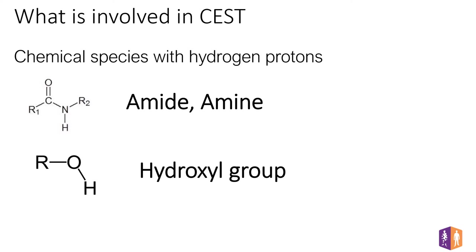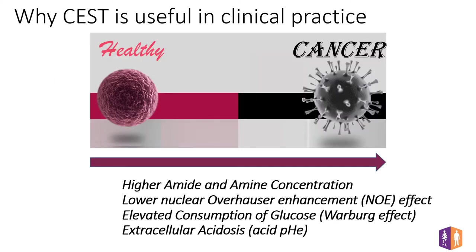The chemical species of interest could be amide or amine, present in peptides and proteins, or a hydroxyl group, present in glucose. In the clinical domain, CEST could therefore offer an interesting way to detect and characterize different lesions with altered metabolic properties, such as tumors, ischemic tissues, and multiple sclerosis. In this presentation, I will focus exclusively on tumor applications.